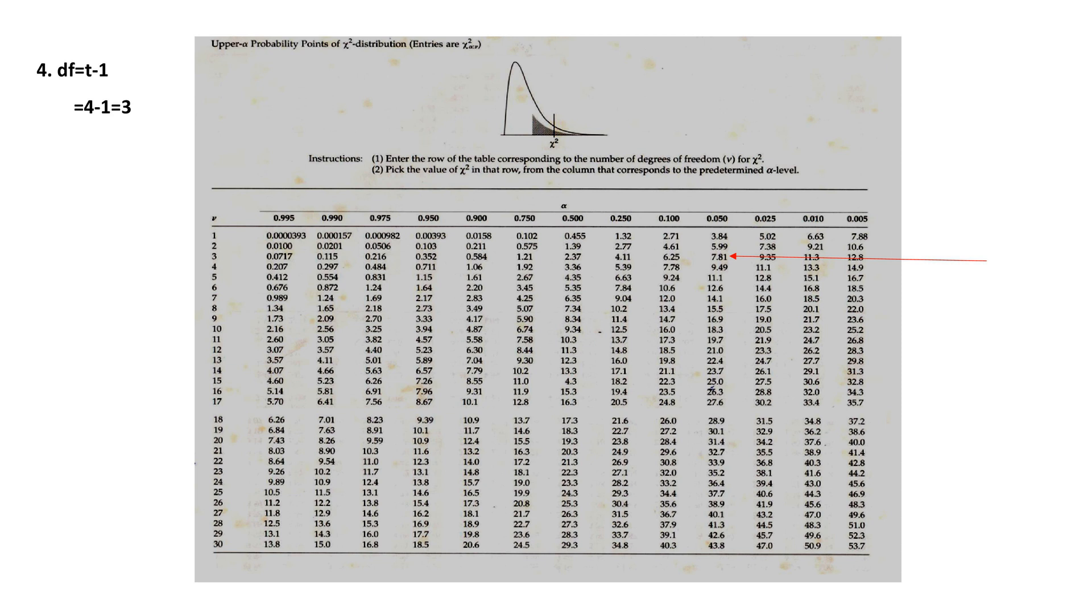So, here in the table, you can find the alpha value from the first row and the degrees of freedom from the first column. So, the corresponding value is 7.81, which is corresponding to the 3 degrees of freedom and 0.05 alpha value.